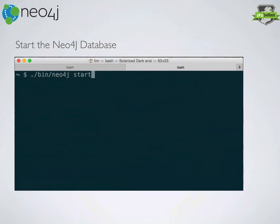Wherever you downloaded the Neo4j database code, just go into that folder. Inside the bin folder, just run 'neo4j start' and that will spin up the Neo4j database server for you. Very simple — it's one of the quickest installs and starts I've ever encountered.